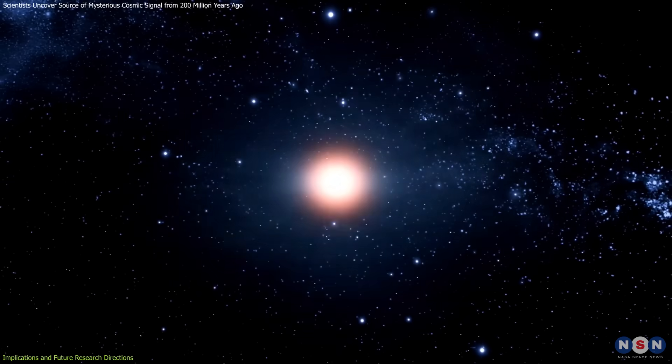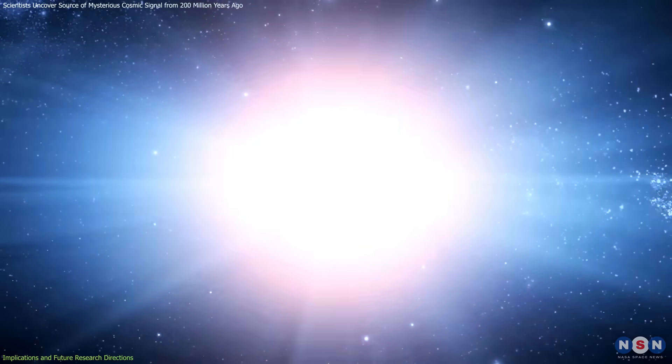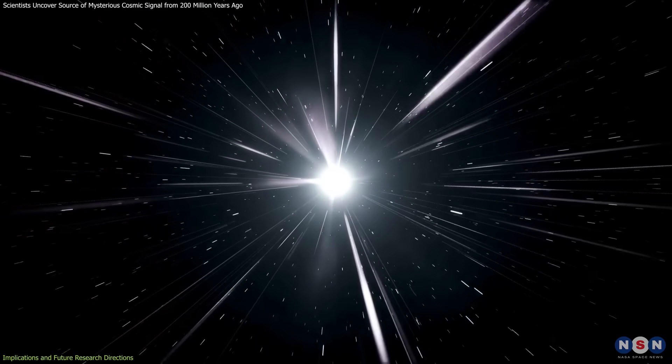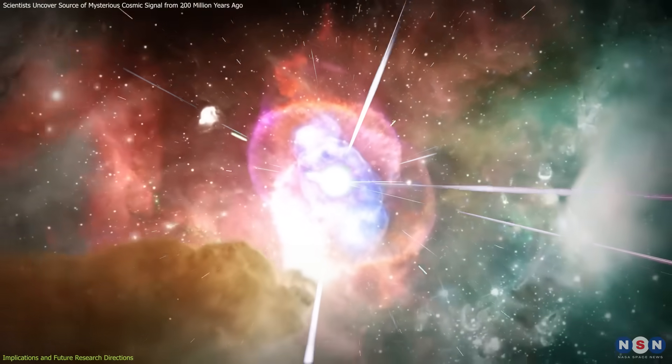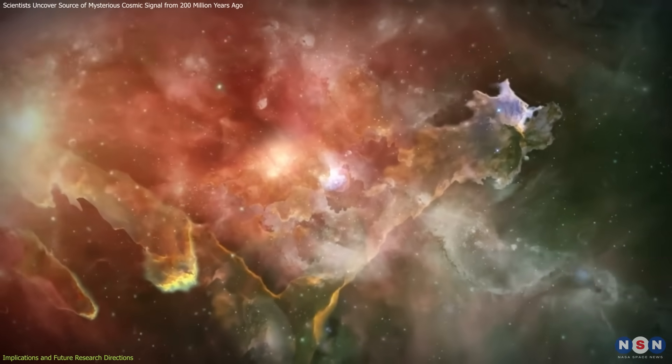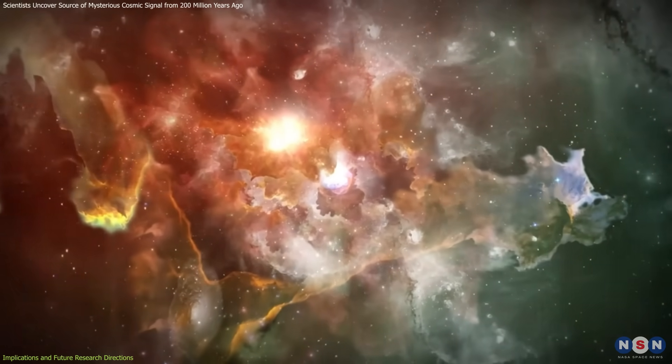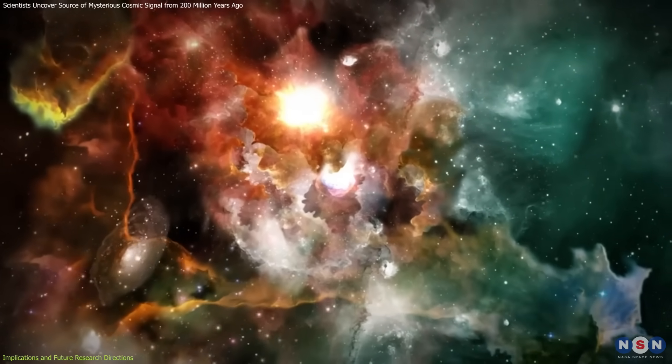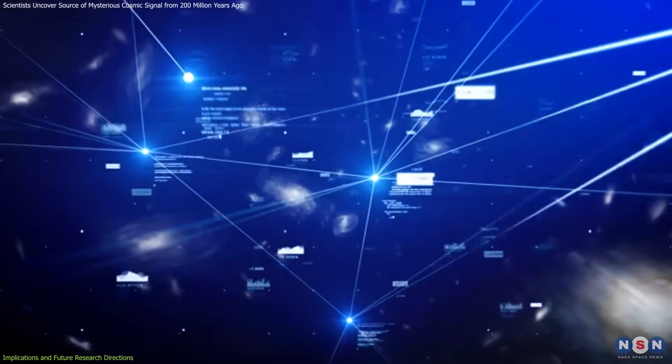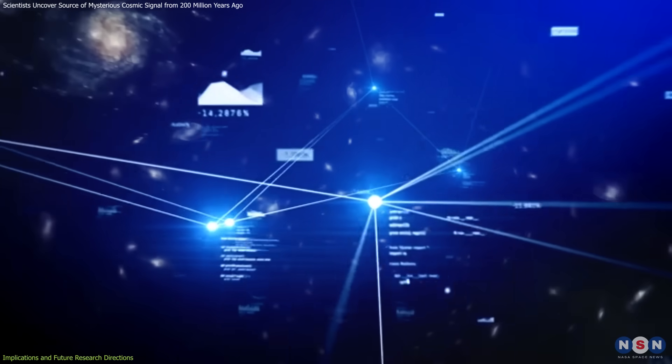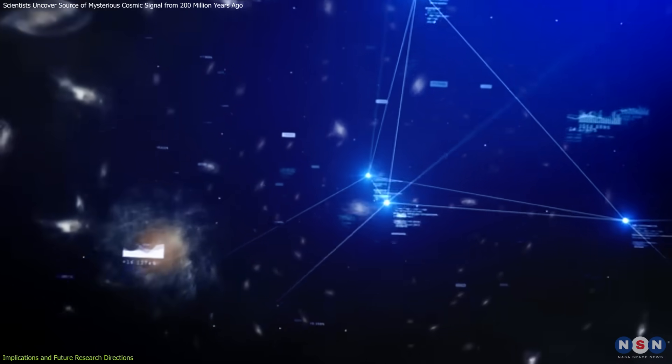Another exciting avenue of research is using FRBs as cosmic probes. As these radio waves travel through space, they interact with the interstellar medium, providing valuable information about the density and composition of the gas they pass through. By studying these interactions, scientists can map the structure of galaxies and even the large-scale structure of the universe.